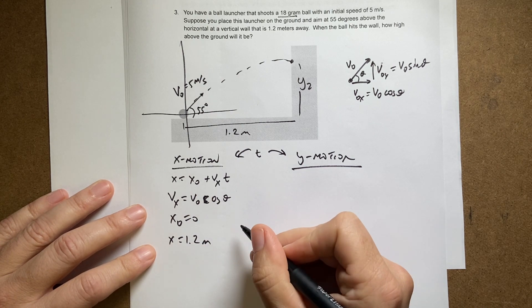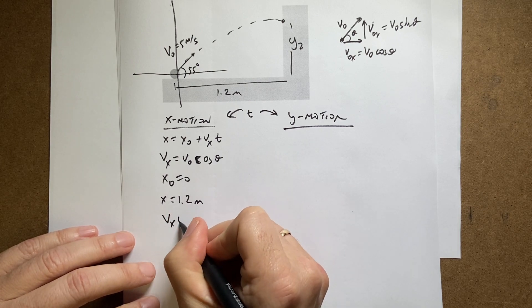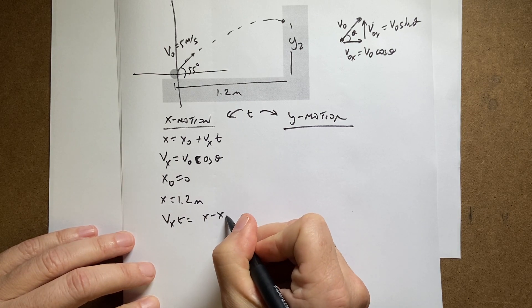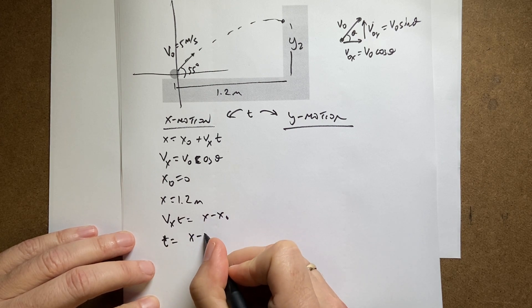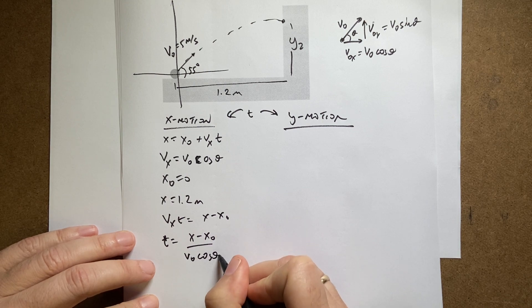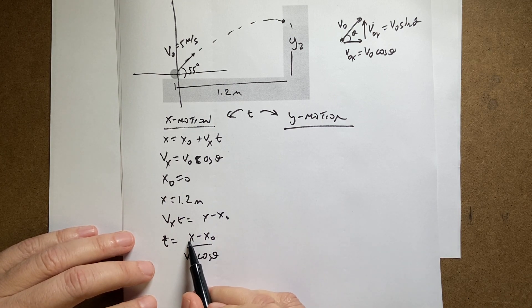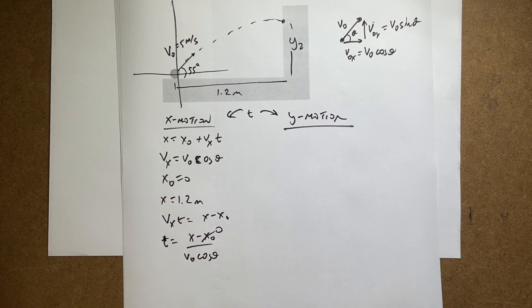I'm gonna move down a little bit. I get VXT equals X minus X0. So T equals X minus X0 over V0 cosine theta. That's how long it takes. And my initial X is 0. And that's 1.2. So that's pretty easy.